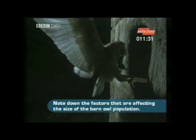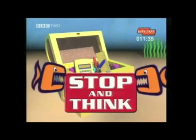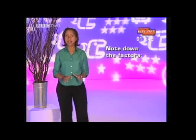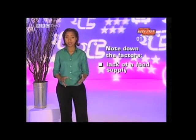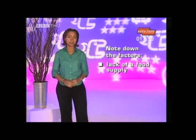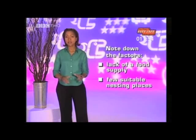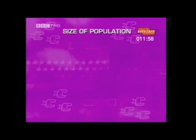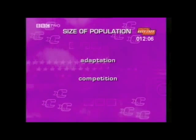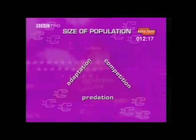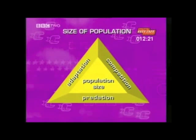The owl population is decreasing because of a lack of food supply — the habitat of the small mammals they feed on is disappearing — and there were few suitable nesting places, so artificial owl boxes have been put up. The size of a population is controlled by three major factors: adaptation, competition from other species for food, water and shelter, and predation — that's being eaten as food by animals further up the food chain. A tip is to draw a triangle with population size in the middle and the three controlling factors on the sides.